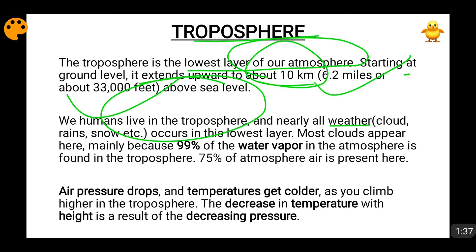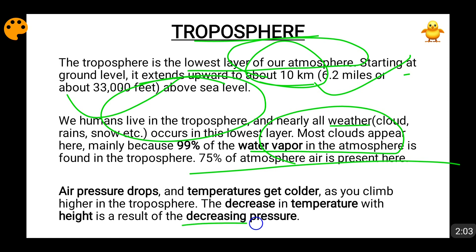Mostly clouds appear here only. 99% of the water vapor of the atmosphere is present in troposphere and around 75% of the atmospheric air is present in troposphere. Now it has a very special property that when we are going upwards, when we are increasing in height, the temperature is dropping and the pressure is dropping. It is being said that temperature is dropping because of a decrease in pressure. As we go up high in the air, the temperature drops — this is why mountains are very, very cool.